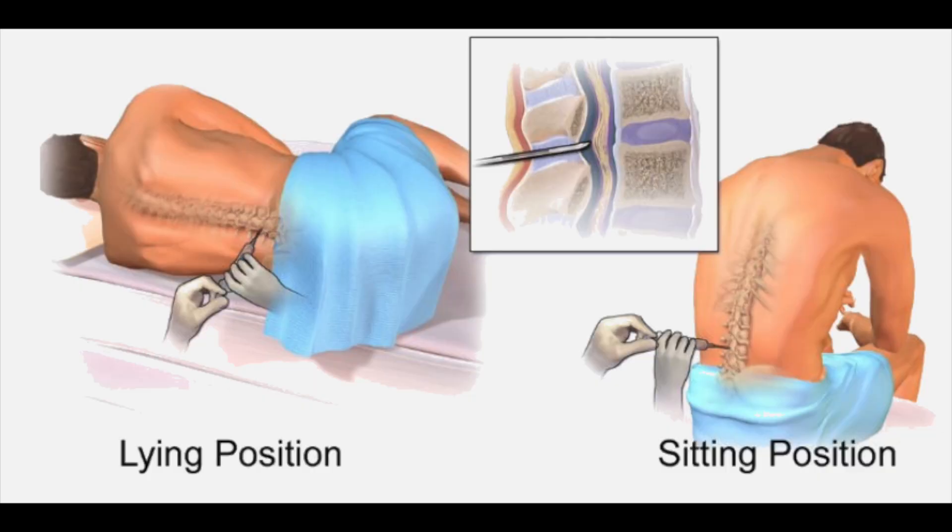Years ago, we used to typically do general anesthesia — you would go to sleep, wake up, and be screaming in pain. It was pretty miserable. We also used spinals and epidurals, but back then you had a full catheter in your bladder because you couldn't urinate, and you were in bed for 24 to 48 hours. It wasn't a very aggressive rehab, and patients didn't do well. So we started transitioning over to blocks, and one of the first was what was called a femoral sciatic block.